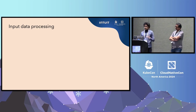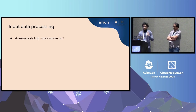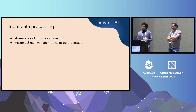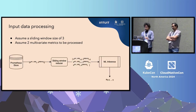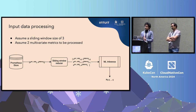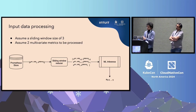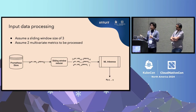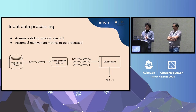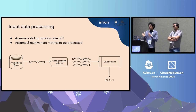A very critical step of the whole pipeline is the sliding window aggregation. The model needs data in a sequence to understand it. Assuming a sliding window size of three and two multivariate metrics — error rate and latency — we fetch the metric at time T, getting a vector of size two. The sliding window reducer produces a matrix that includes not only the current timestamp but also T minus one and T minus two, giving us a window of three data points that can be fed into the model.